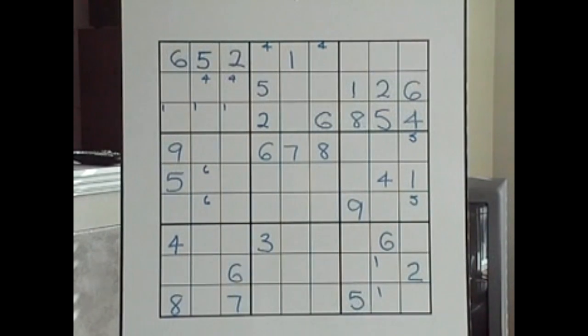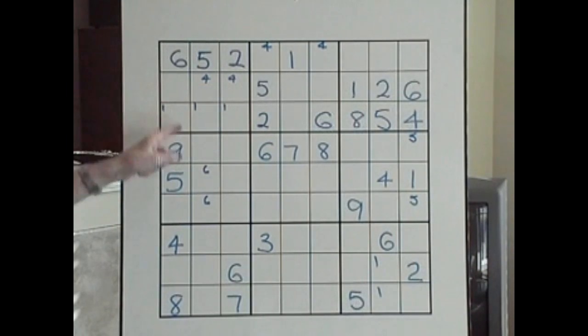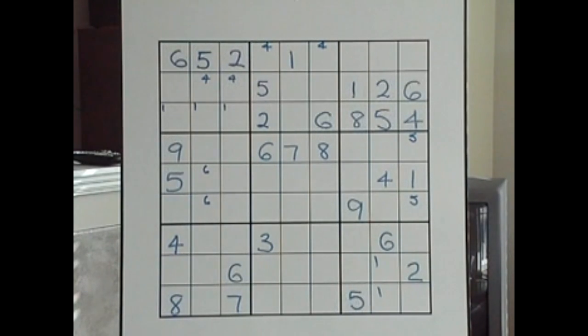Threes — there's no threes. Fours, fives, sixes — the sixes are all there, that's great. We did the ramification of the six when we got the new one. Sevens — no sevens, let's leave it.